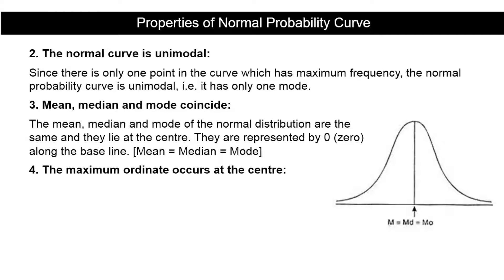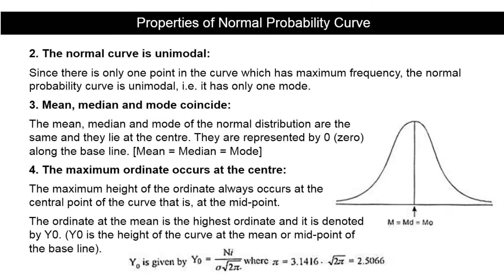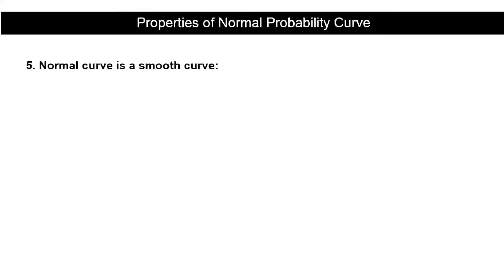The fourth property is that the maximum ordinate occurs at the center. The maximum height of the ordinate always occurs at the central midpoint of the curve — the ordinate at the mean is the highest ordinate, denoted by y₀. y₀ is the height of the curve at the mean, and is represented by the formula: y₀ = N / (σ √(2π)), where √(2π) = 2.5066.